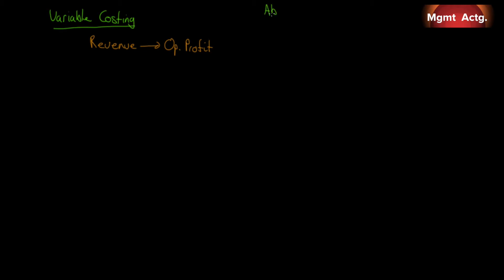So if revenues are flat, operating profit should also be flat. If revenues are dropping, operating profit will tell us that that's what's going on — we don't have to pull apart different variables. Under absorption costing, we have seen that both revenue and production decisions can drive operating profit.